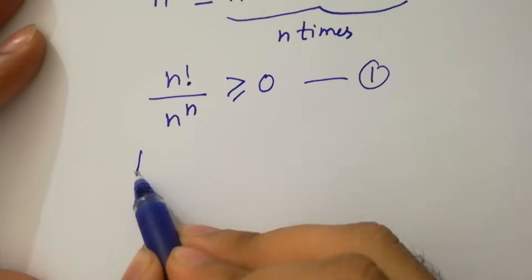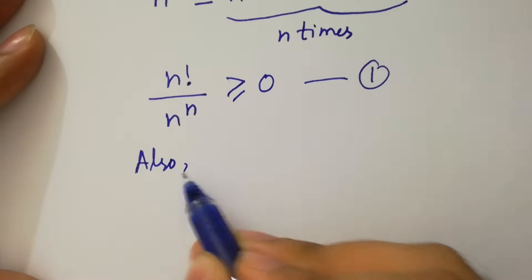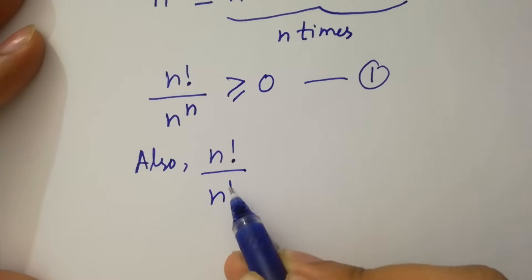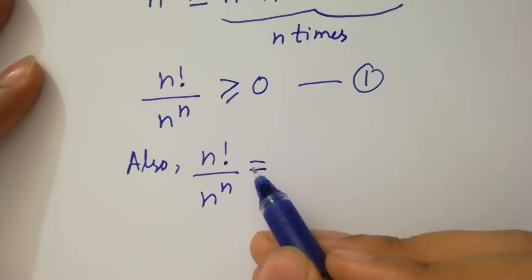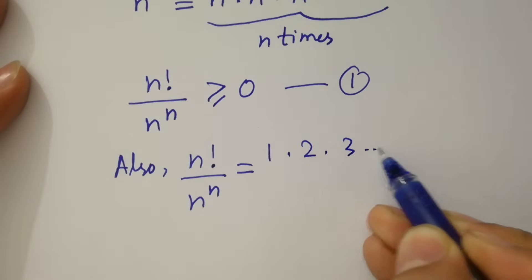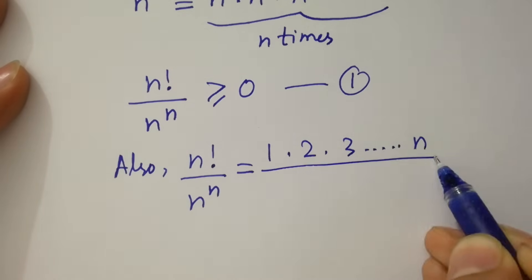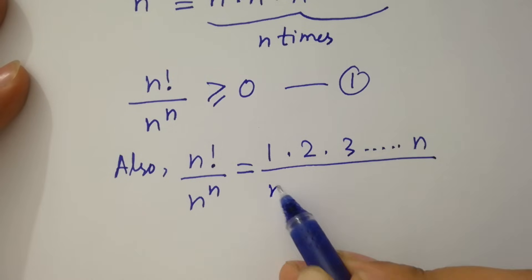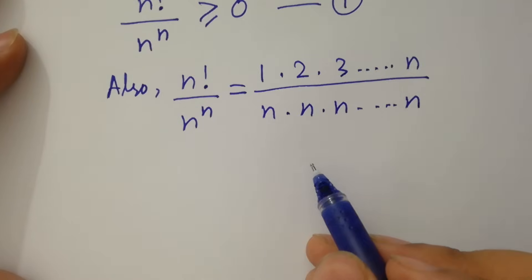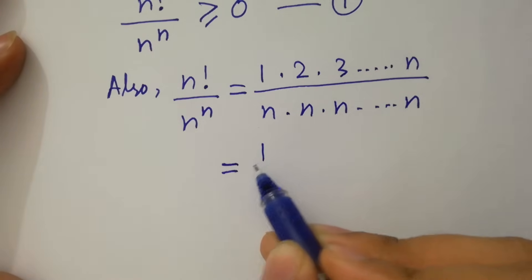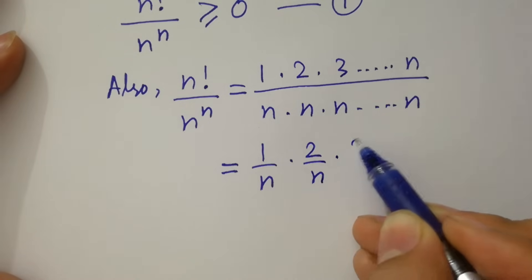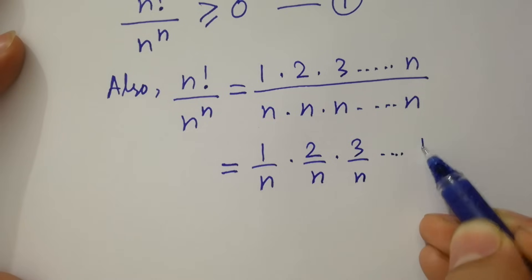Also, n factorial over n to the power n equals (1 · 2 · 3 · ... · n) over (n · n · n · ... · n), which gives us (1/n) · (2/n) · (3/n) · ... · (n/n).